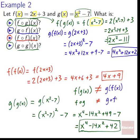We can see it in what we got: f of g of x gave us 2x squared minus 11, but g of f of x gave us 4x squared plus 12x plus 2 — totally different results. So the order that one function goes into another, the order of composition, is of massive importance.